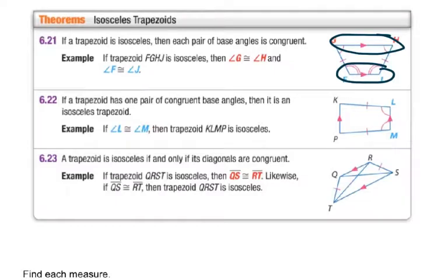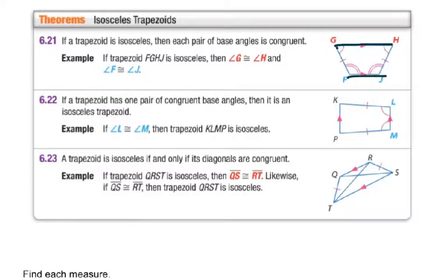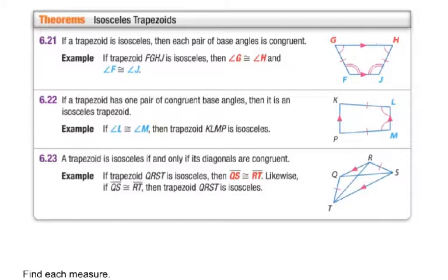Since GH and FG are parallel, the leg acts as a transversal, so angle G and angle F are supplementary. This is true for any trapezoid — the two angles along one leg from one base to the other will be supplementary. But an isosceles trapezoid has congruent angles connected to each base.